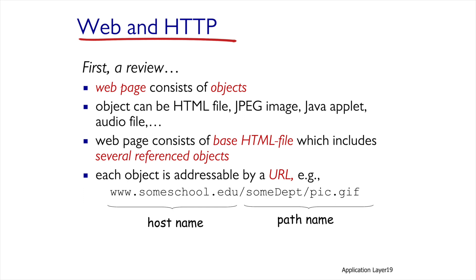A web page is an internet page which consists of text and zero or more objects. The object can be a file, a picture, a sound, video, and even a program loaded inside the page. The web page is written in a language called HTML.